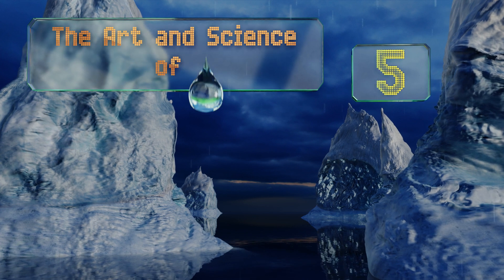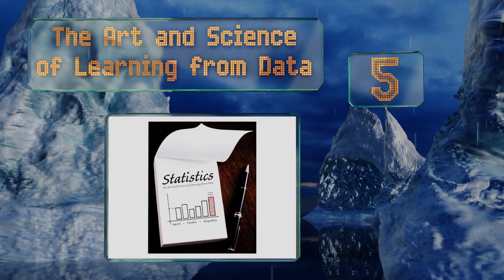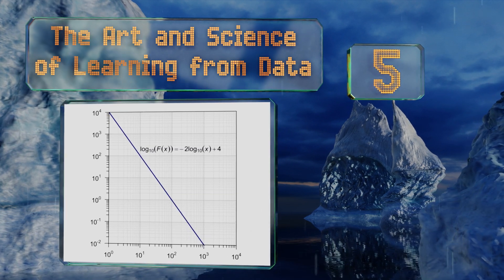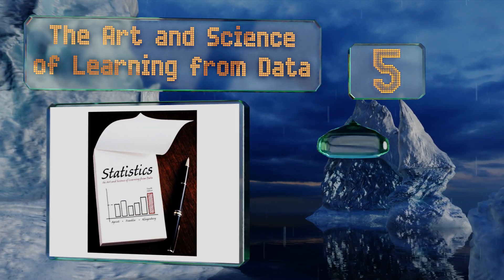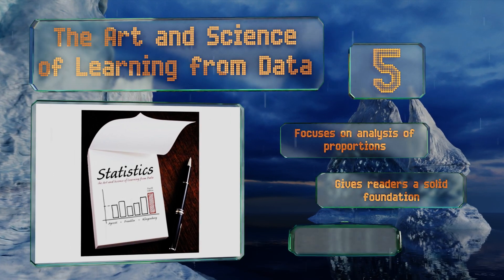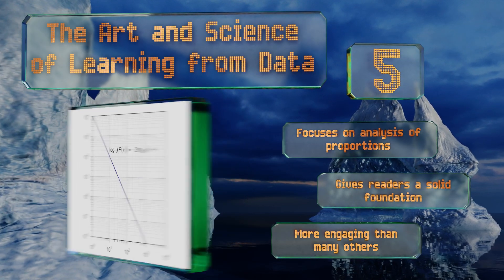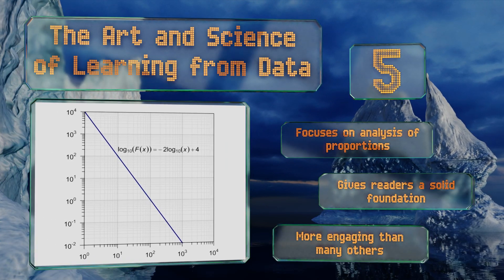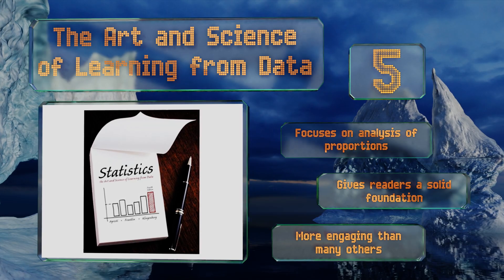Halfway up our list at number five, instead of simply concentrating on the memorization of procedures, The Art and Science of Learning from Data takes a more conceptual approach, teaching students to ask the correct questions when analyzing information. It's both accessible and extremely enlightening. It focuses on the analysis of proportions and gives readers a solid foundation. It's more engaging than many others.